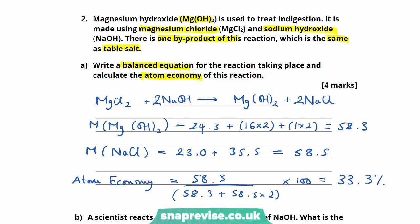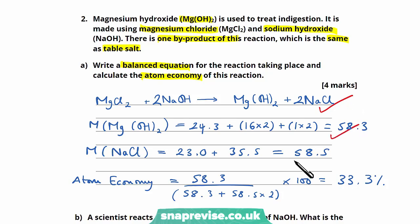This question holds four marks: the first for writing the balanced equation, the second for calculating the molar mass of magnesium hydroxide, the third for sodium chloride, and the fourth for the correct atom economy equation and correct answer of 33.3%.